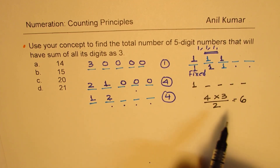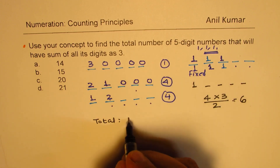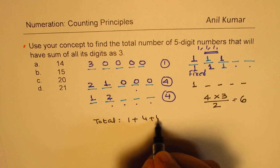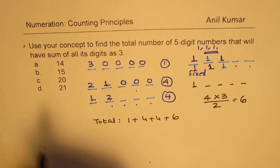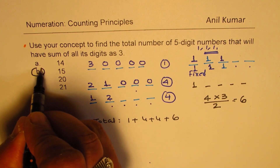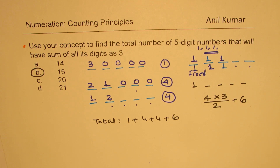And now we can write down our answer. The total combinations are one plus four plus four plus six, which is fifteen. So we have fifteen combinations when we have five digits and the sum of all the digits is three. That is how you can solve this question. I hope you find it interesting and useful. Feel free to write your comments, share your views, and if you like and subscribe to my videos, that'd be great. Thanks for your time, and all the best.